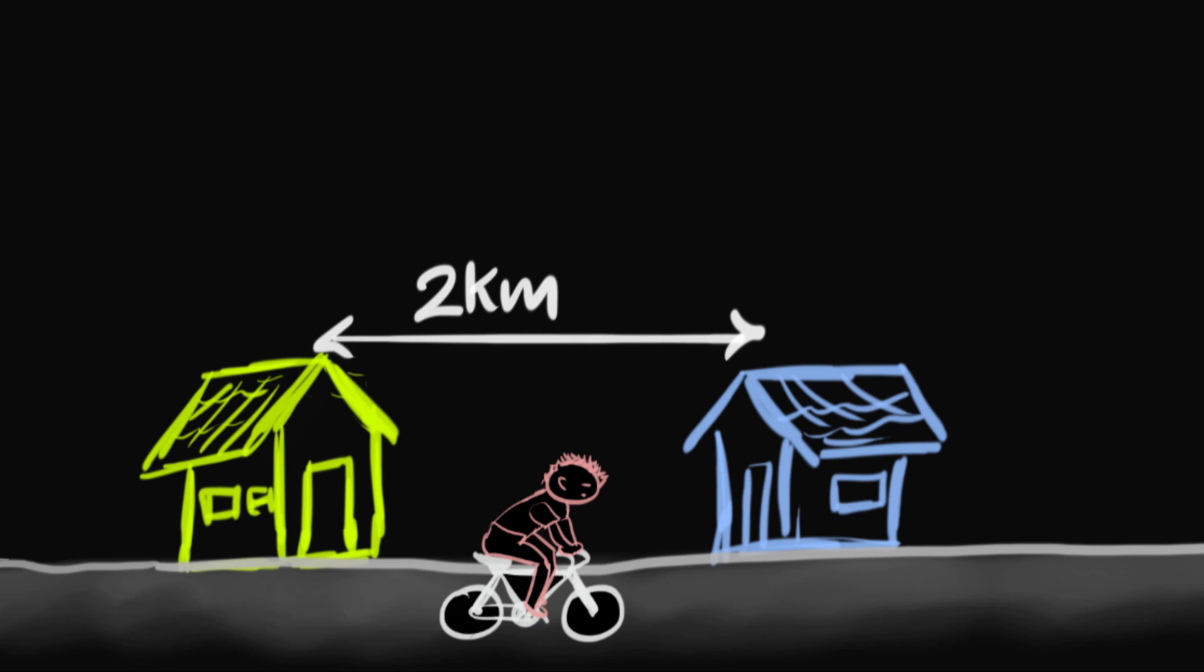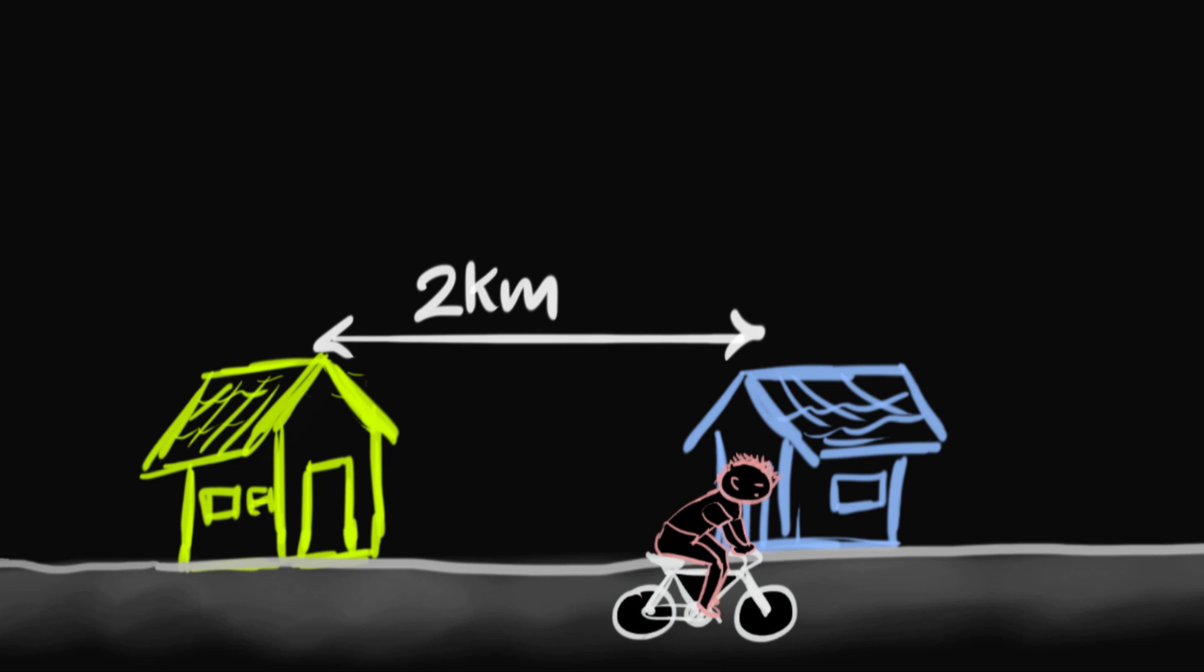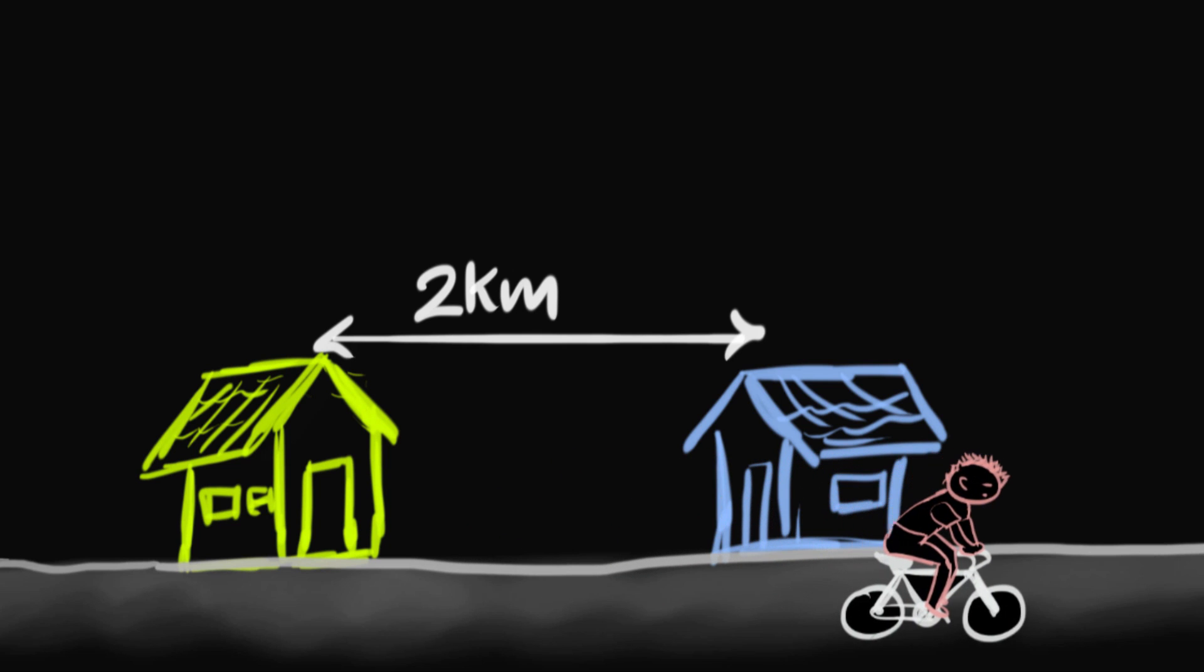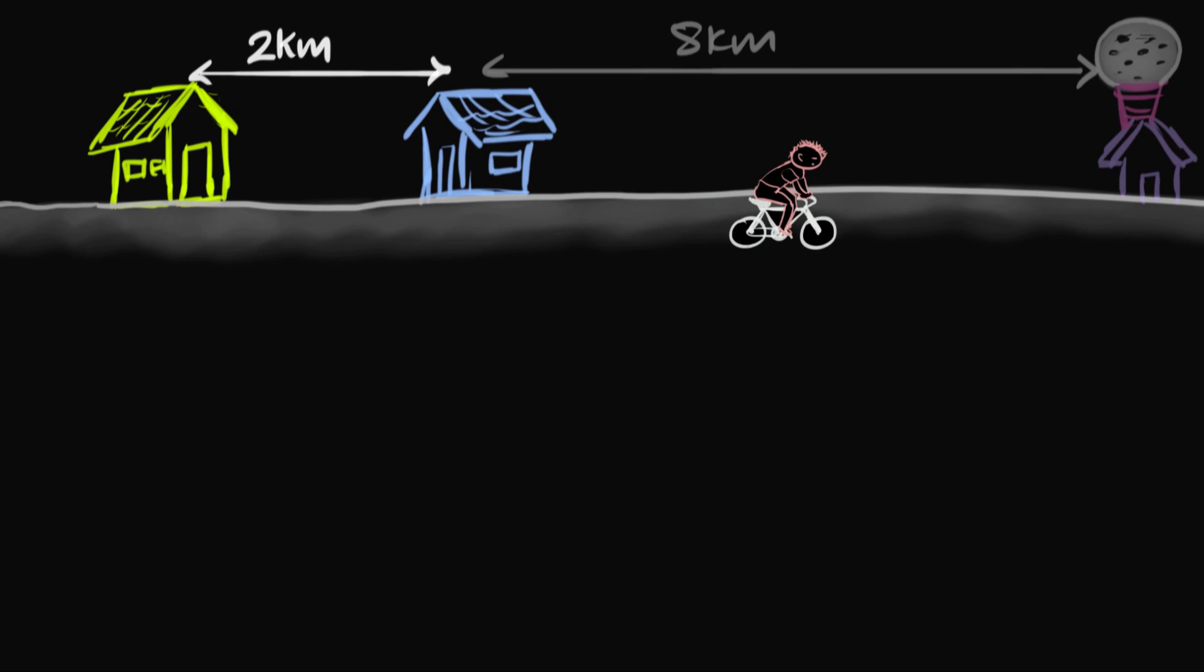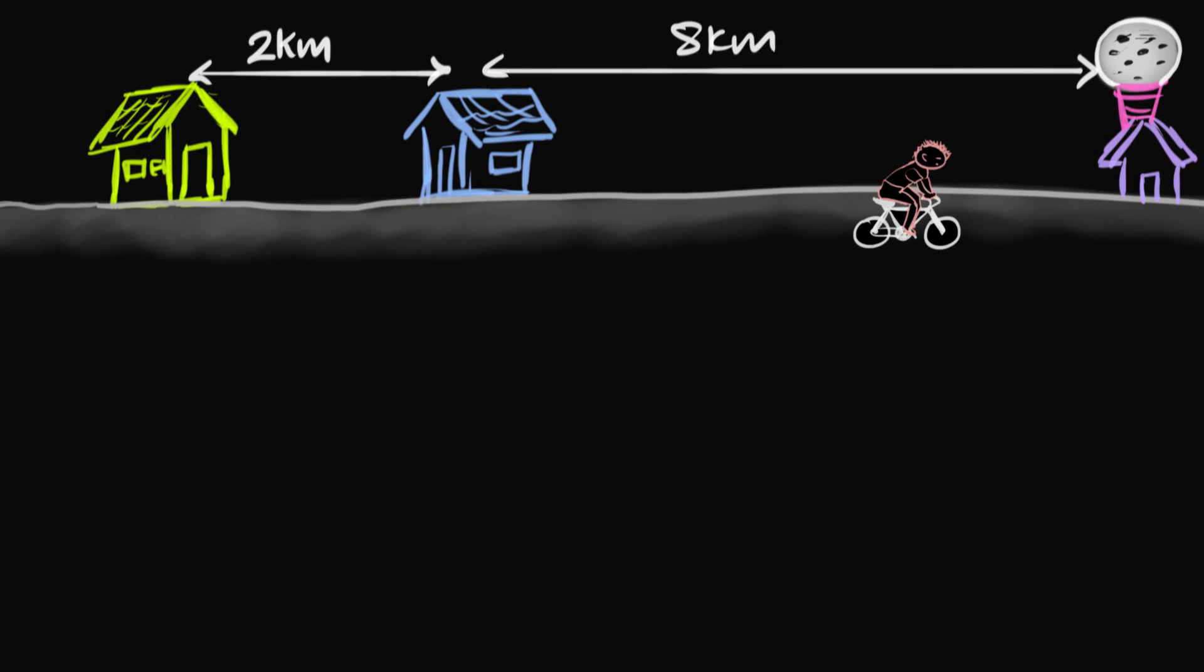But guess what, he doesn't stop at my place. You see Satra loves ice cream, and so he decides to first visit an ice cream shop, which is about 8 kilometers away from my house, and he doesn't tell me about this. And so this entire journey of 10 kilometers takes him about one hour. So he reaches the ice cream shop after one hour, gets his ice cream, and then starts riding back towards my place. And this takes him another one hour. So he reaches my place after two hours.